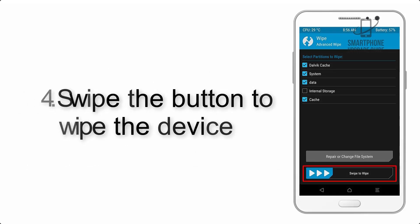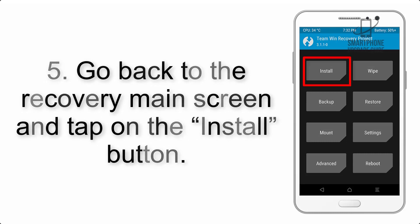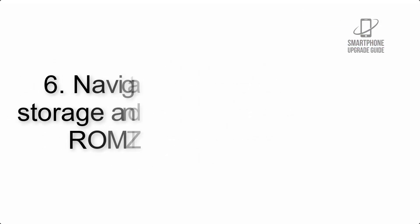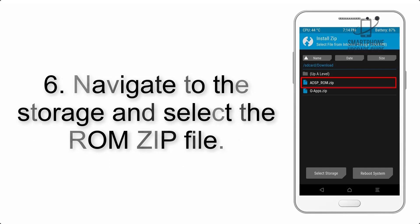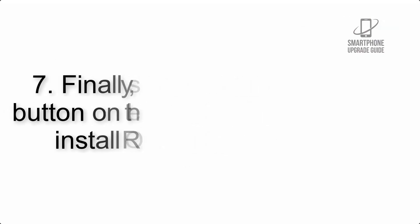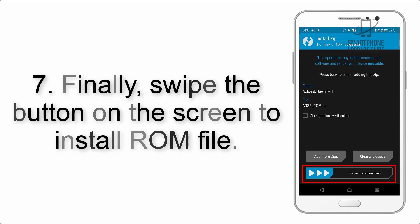Step 4: Swipe the button to wipe the device. Step 5: Go back to the recovery main screen and tap on the Install button. Step 6: Navigate to the storage and select the ROM zip file.